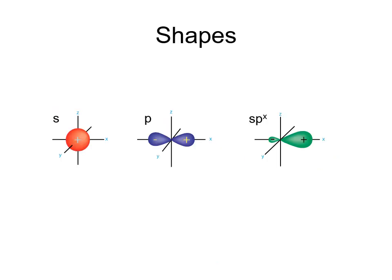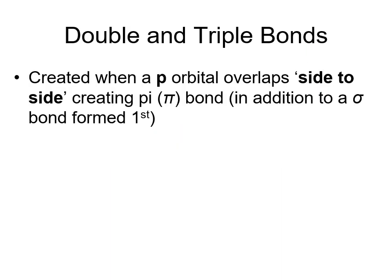Regarding the shapes of these orbitals: the most probable region to find electrons gives each orbital its shape. An s orbital is spherical; a p orbital has a double-lobe shape. When hybridized — whether sp, sp², or sp³ — the hybrid orbitals look like one large lobe and one small lobe, similar to a p orbital but asymmetric. Double and triple bonds are created when these p orbitals overlap side to side; we call this a pi bond. So we have a sigma bond, which is end-to-end overlap, and a pi bond, which is side-to-side overlap.